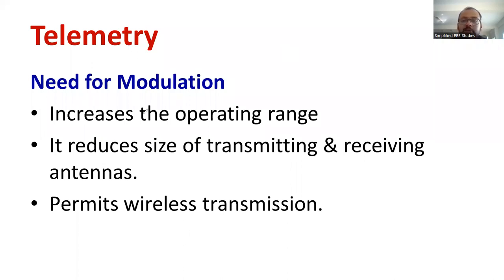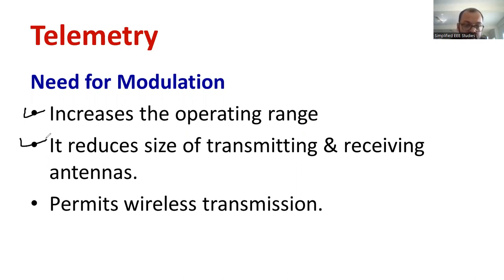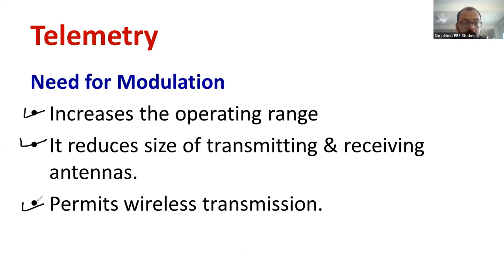Now I would like to explain the importance of modulation. The first purpose of modulation is to increase the operating range, allowing the signal to be transmitted over a very long distance. It also reduces the size of transmitting and receiving antennas — otherwise you would need to increase antenna size, which is not cost effective or economically favorable. Modulation also supports wireless transmission. These are the purposes of going for modulation.